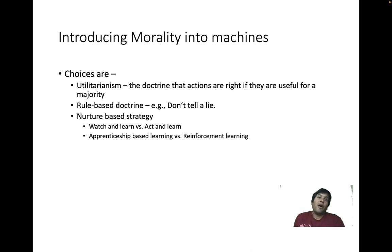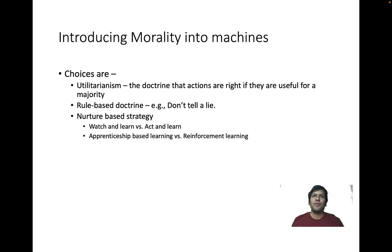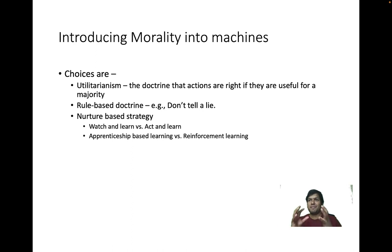Can we introduce morality into machines? Are we building rule-based programs following utilitarianism — choosing what's good for the majority? But what if the majority overpowers the minority? These are all relative terms without concrete answers, yet humans continuously strive with these scenarios. Think before you start writing code to build a machine learning system.